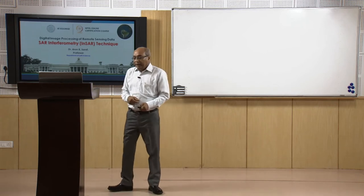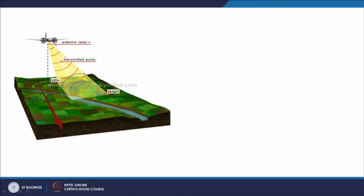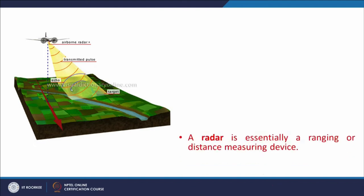This is how radar creates images. As seen here — though it is an airborne sensor, the same thing happens with satellites — signals are transmitted, and the blue curves represent the backscattered energy going back. Different targets and objects on the surface of the Earth behave differently in the microwave region and are recorded differently. This is how the images are formed.